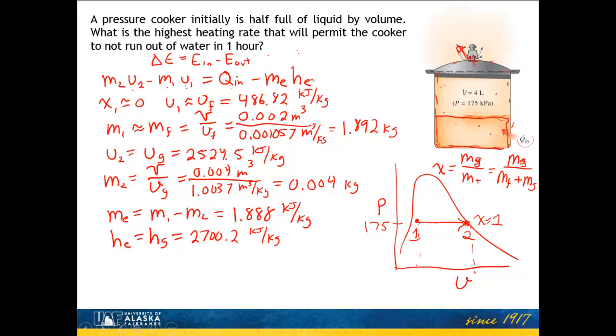Now I'll take all those values we computed and plug them into my energy balance to find Q in. The arithmetic says it's 4187 kilojoules. That's how much energy went in to boil all that liquid into vapor. The problem asks for the highest rate, which is Q dot equals Q in over time, one hour. That's 4187 kilojoules per hour or 1.163 kilowatts. That rate will exactly boil away the liquid. A lower rate will have some liquid left; a higher rate will completely boil in less than one hour. That completes the problem.